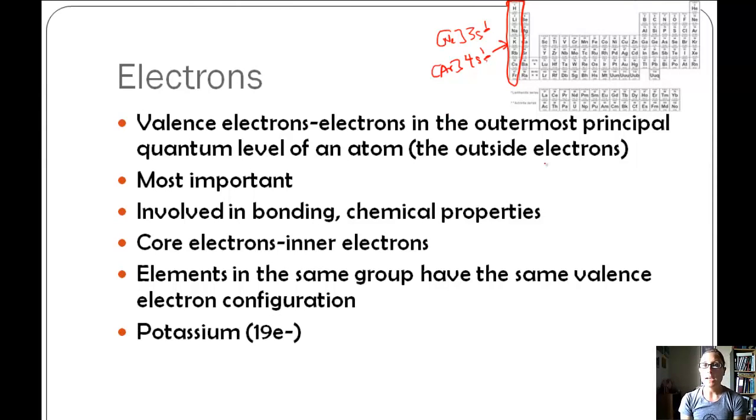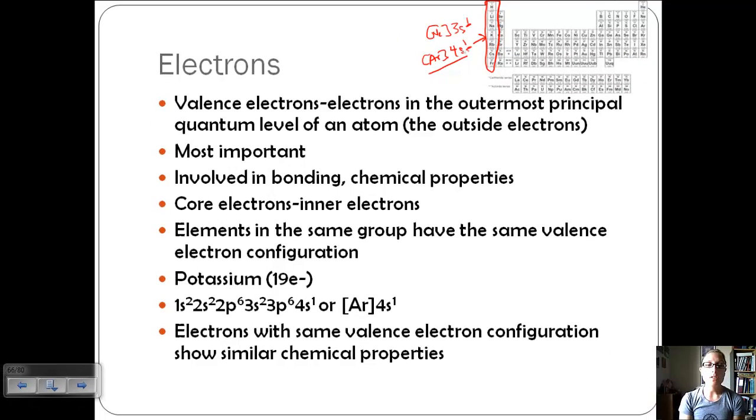If we look at potassium, which we just talked about, argon 4s1, it's got one valence electron. Electrons with the same valence electron configuration also have similar chemical properties. That's one of the nice things about the periodic table. It arranges elements based on their similarities. If we looked at group 2, all of these have two valence electrons.